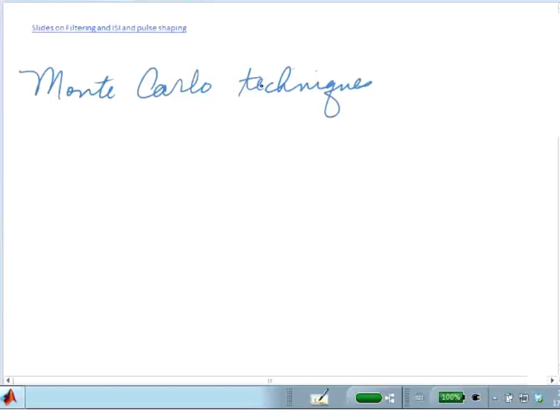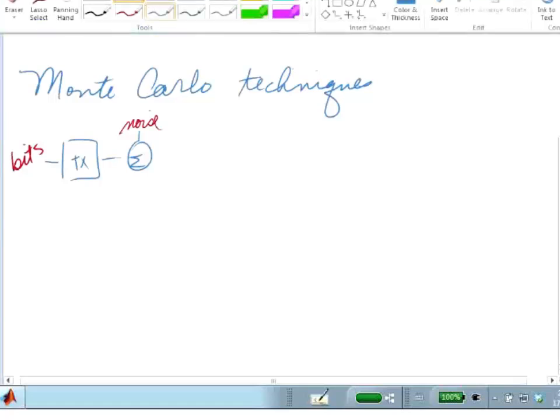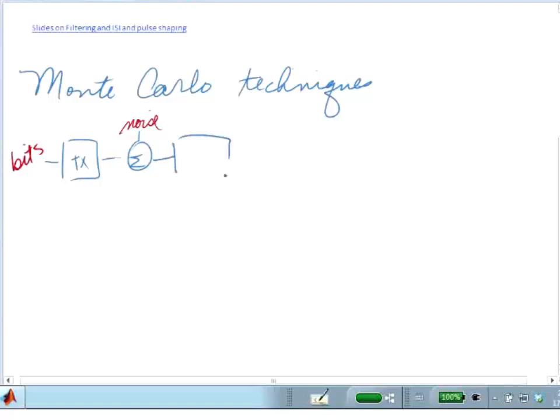So we want to take the Monte Carlo technique and apply it to communication systems. That means that I come in, I have some bits, get the input, I put them into my system. I have a transmitter, I add some noise to it. This is my input, my random input is the noise. And then I put it through my numerical simulator where I have a channel, some sort of channel response.